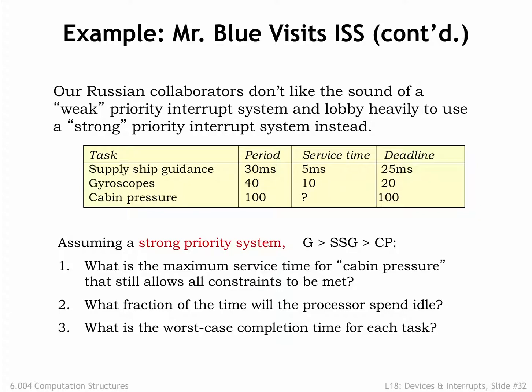They'll simply preempt CP when they need to run. Instead, we need to think about how much CPU time will be used by the SSG and G tasks in the 100ms interval between the CP request and its deadline. In a 100ms interval there might be 4 SSG requests at times 0, 30, 60, and 90, and 3 G requests at times 0, 40, and 80. Together, these requests require a total of 50ms to service. So the service time for CP can be up to 50ms and still meet the 100ms deadline.